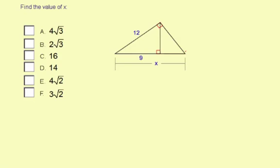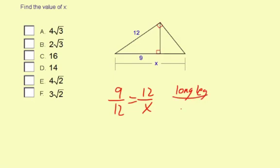And x represents the hypotenuse of the largest right triangle. So we're going to have 9 to 12 equals 12 to x. The ratio we used is long leg to hypotenuse for the two different triangles. Now let's solve for x.